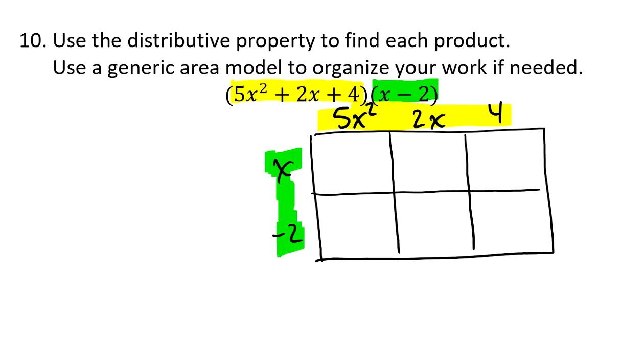So inside of these, I'm just finding the area of each of these tiny little rectangles. The first one, I've got 5x² times x. That's 5x² times another x, which is 5x³. Going one to the right, I've got 2x times an x, which is 2x². And then finally, 4 times an x is 4x.